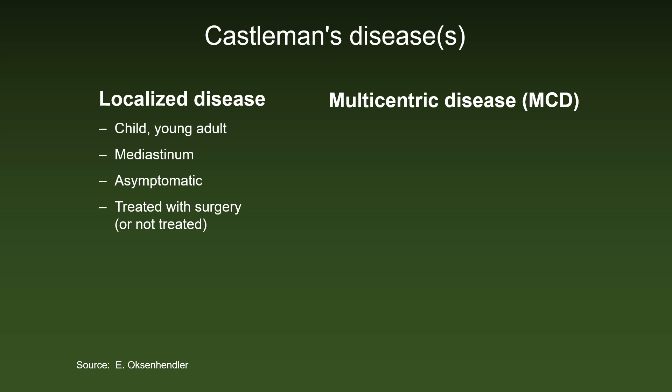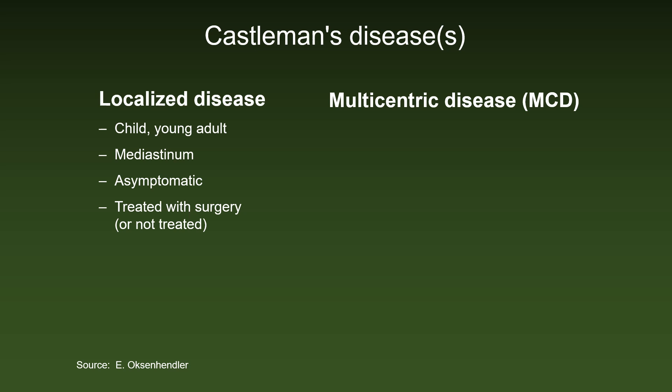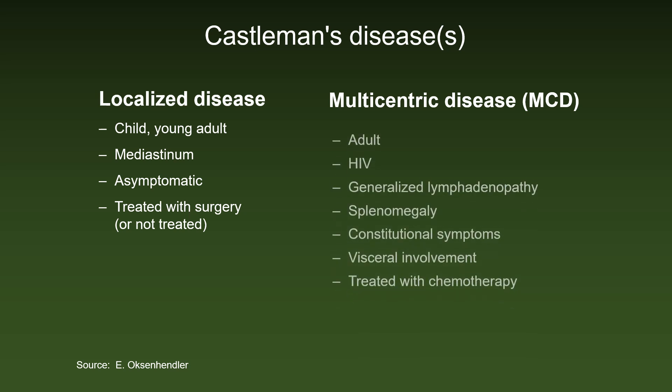In contrast, multicentric disease occurs in adults. It is a generalized lymphadenopathy with splenomegaly, with considerable constitutional symptoms. There is visceral involvement, and it needs to be treated with chemotherapy.